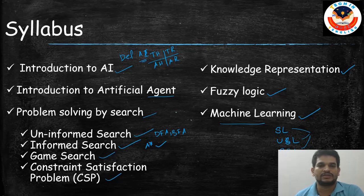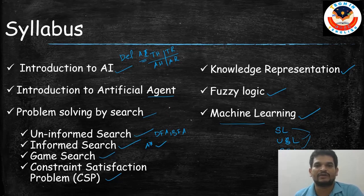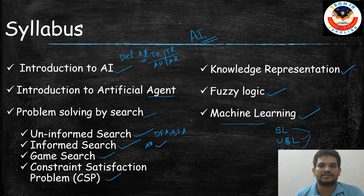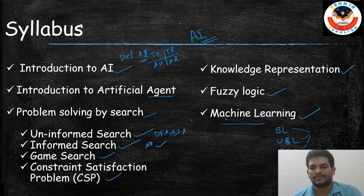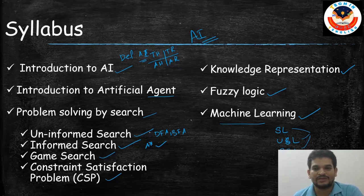So this is the syllabus we are covering in the total AI course. Apart from these, if you want any extra concepts added to this course, please let me know in the comment section and I will add those concepts as well.